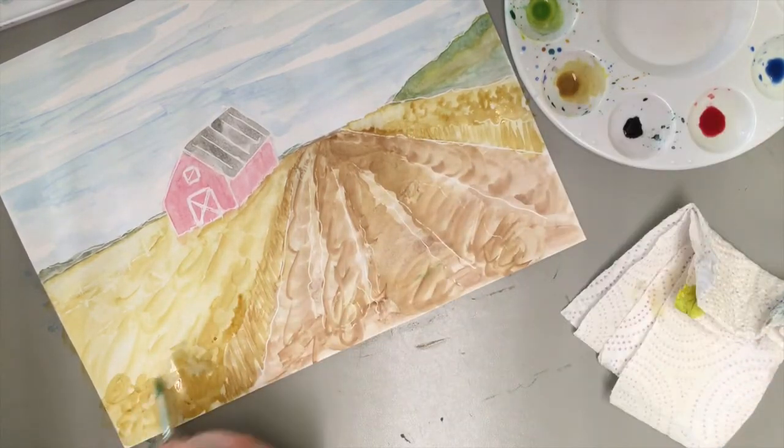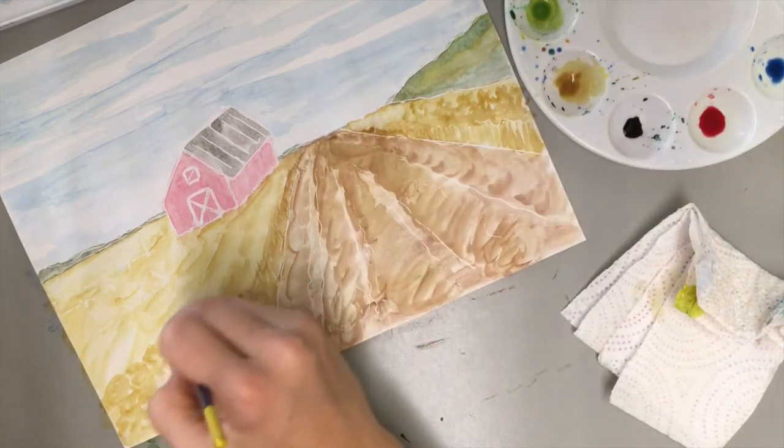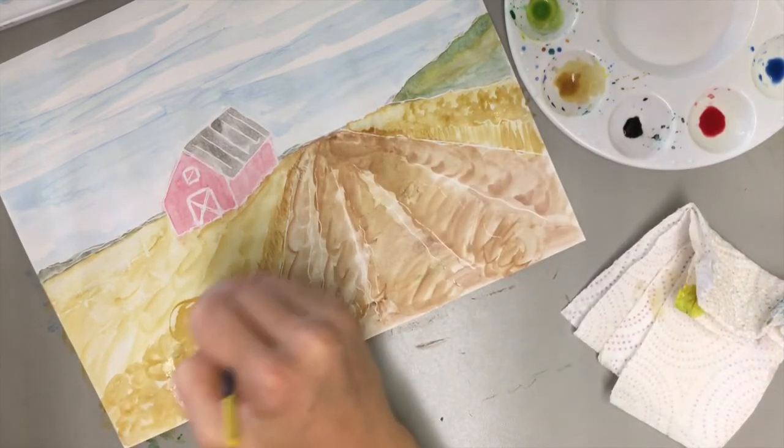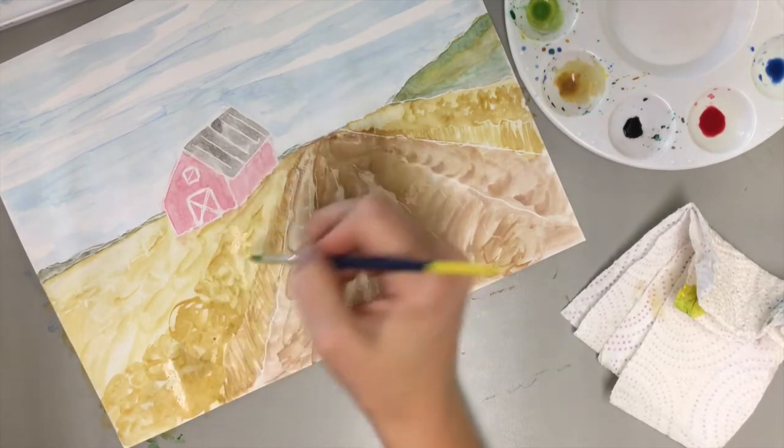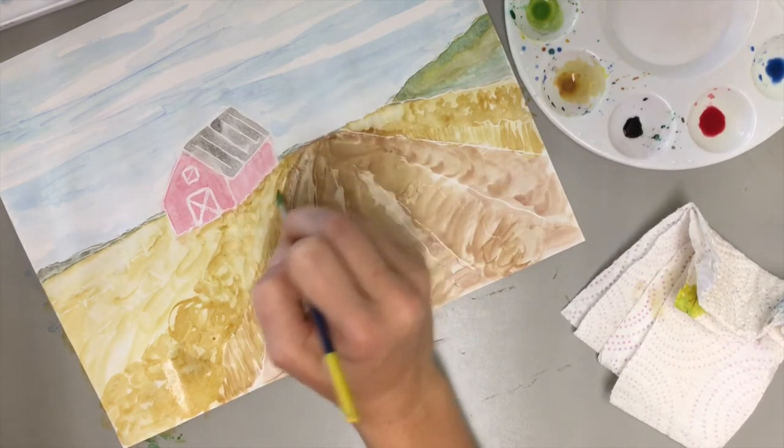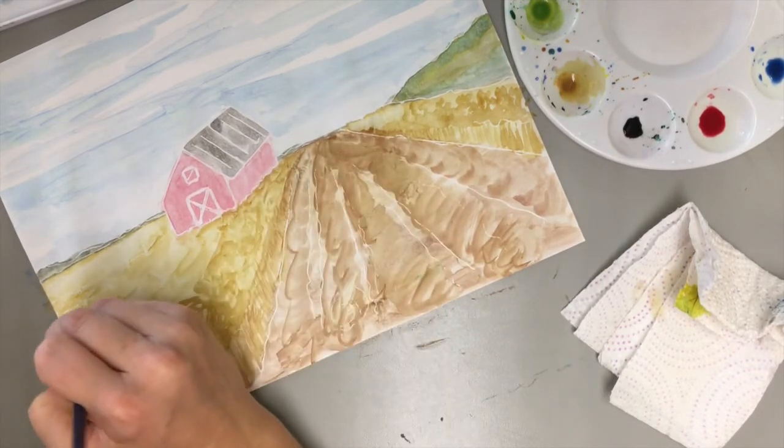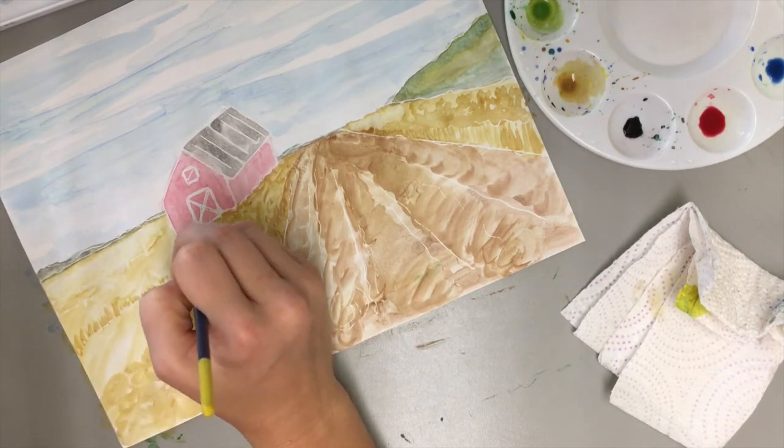We can see more texture and details in the areas that are closer to us, and then we see less of that as it goes off into the distance. Just kind of letting my paintbrush dance across the page. Put a line for our tractor kid to get in and out of the barn right there.